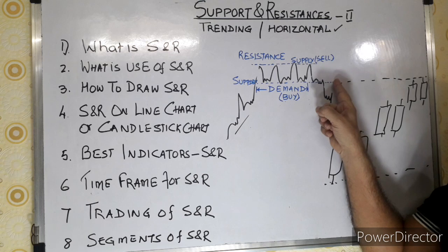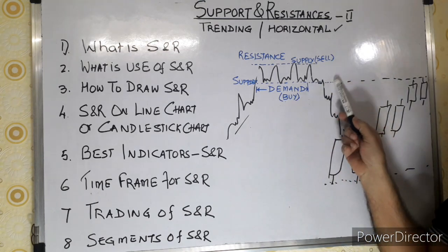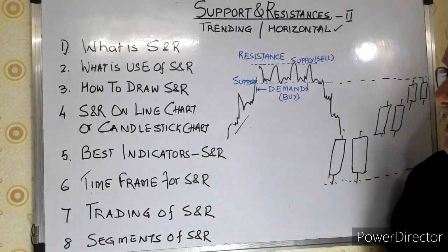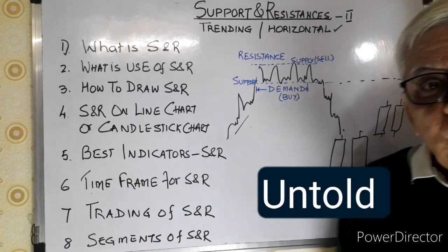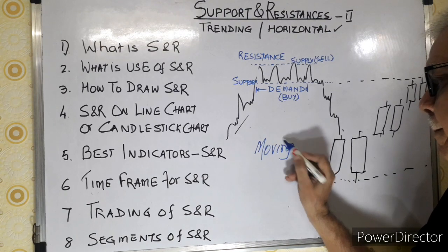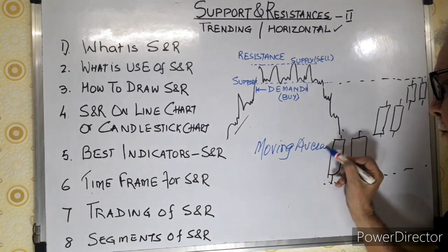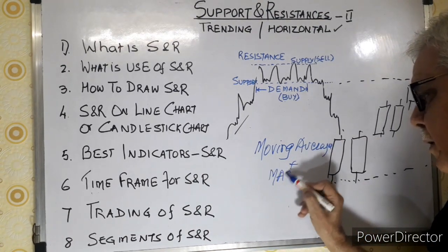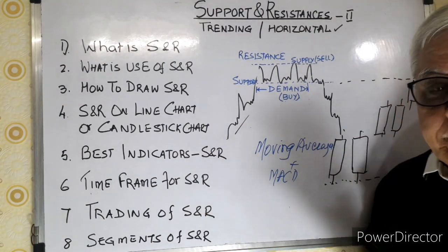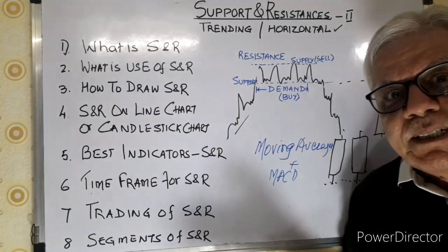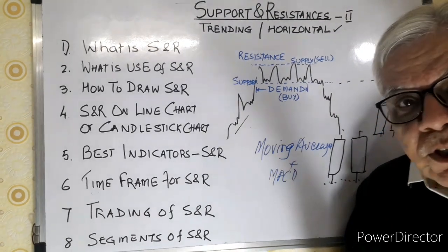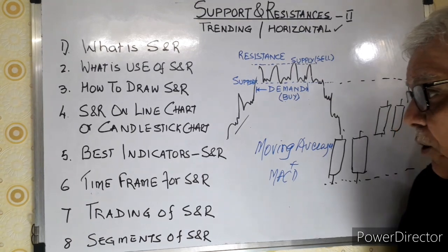If the price is 100 rupees, the zone could be 101-102 on the upside or 98 on the downside. The best indicators — which nobody mentions — are moving averages and MACD. Both are very ideal for support and resistance. We don't depend on one indicator; we depend on two, and sometimes even three indicators.